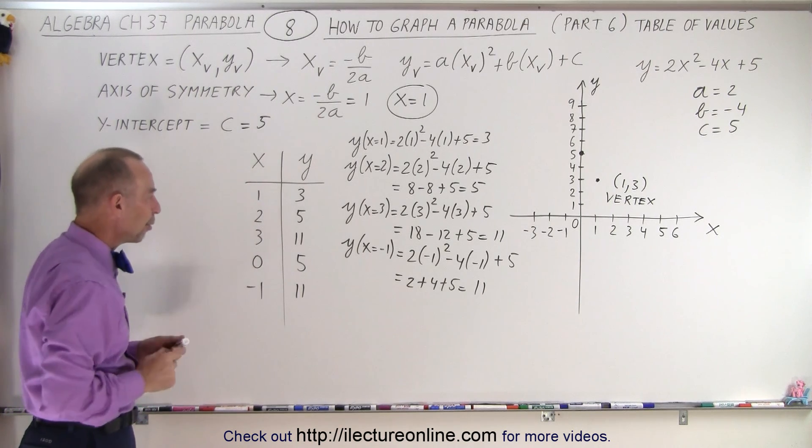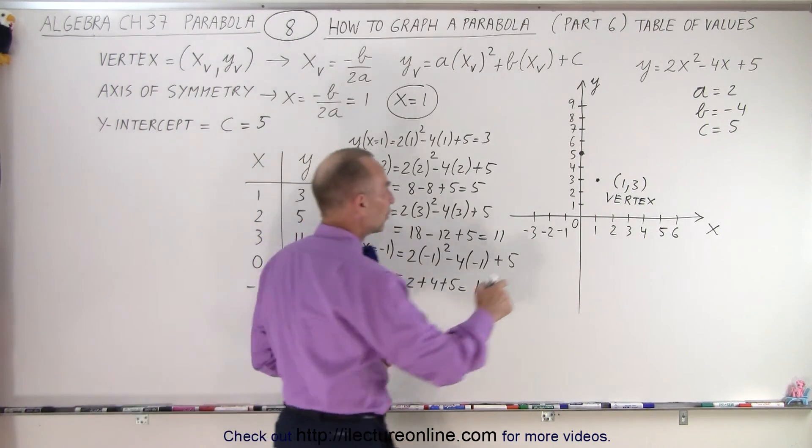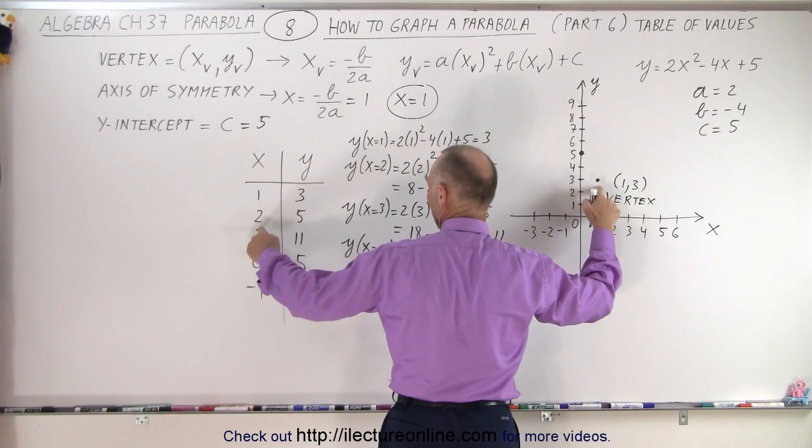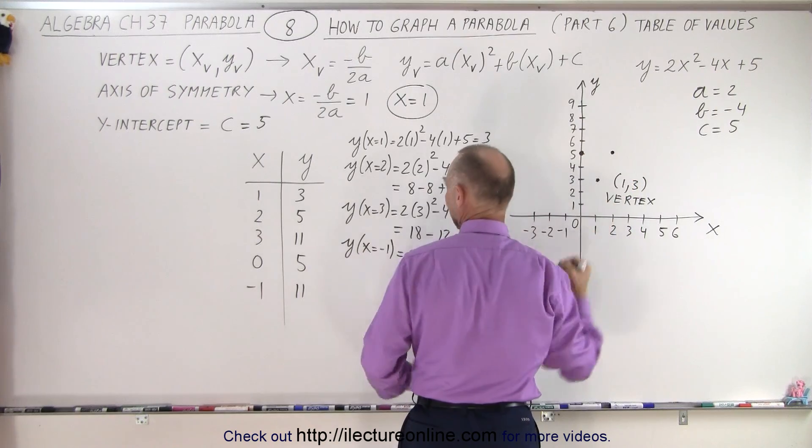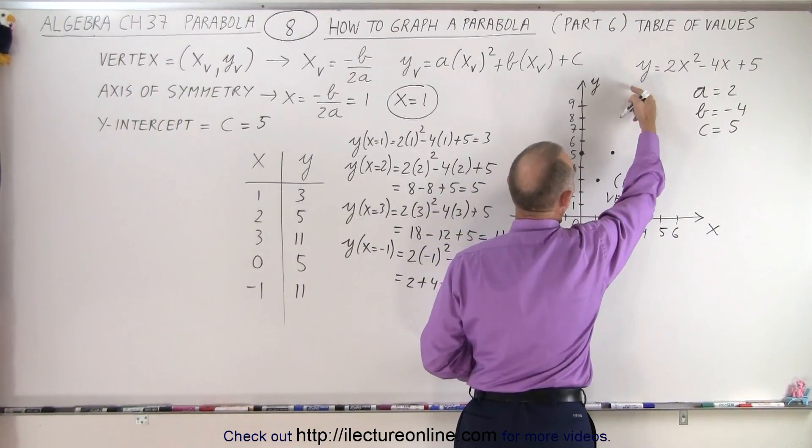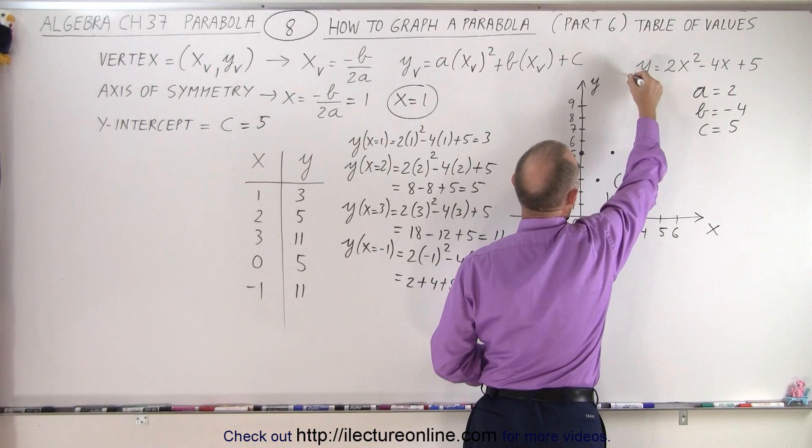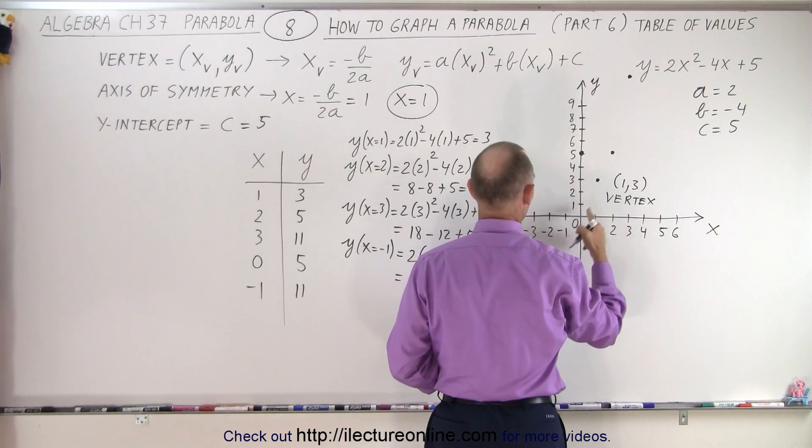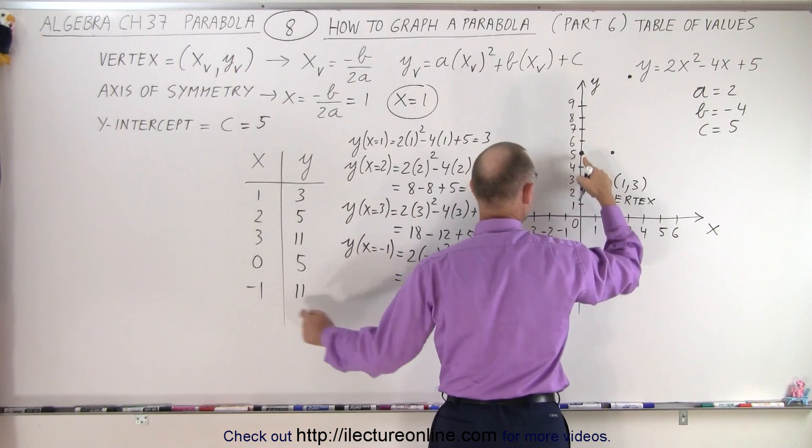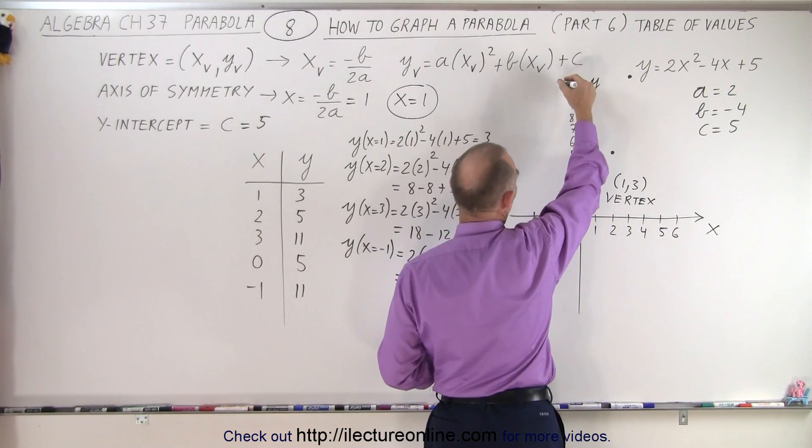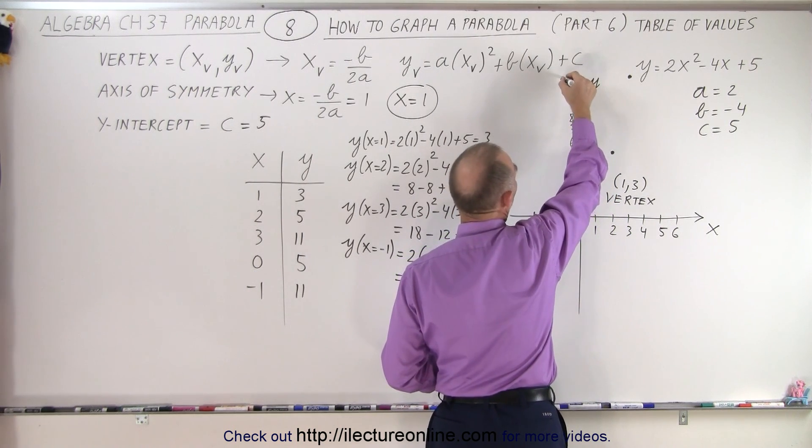Now we have five points to plot. We have the point (1,3), the point (2,5), so 2 and 5 which is right over here. And then we have the point (3,11), which would be way up here somewhere. And then on the left side, we have (1,3), then we have (0,5), and (-1,11), which goes way up here as well.